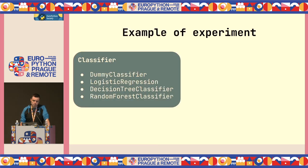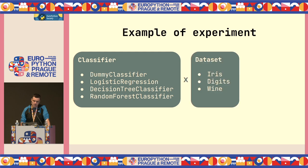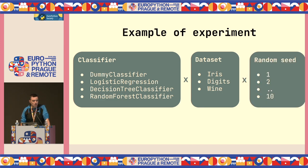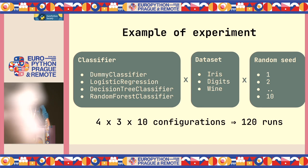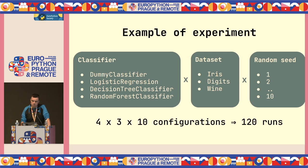Here we see an example of experiments. Let's say we have a classification problem and we want to evaluate different classifiers: a dummy classifier, logistic regression, and decision trees. We might also want to experiment with different datasets, and check how robust these models are depending on the seed, so that our performance hasn't just been lucky. With this very simple setup, we get to more than 100 configurations — modeled as 120 runs.